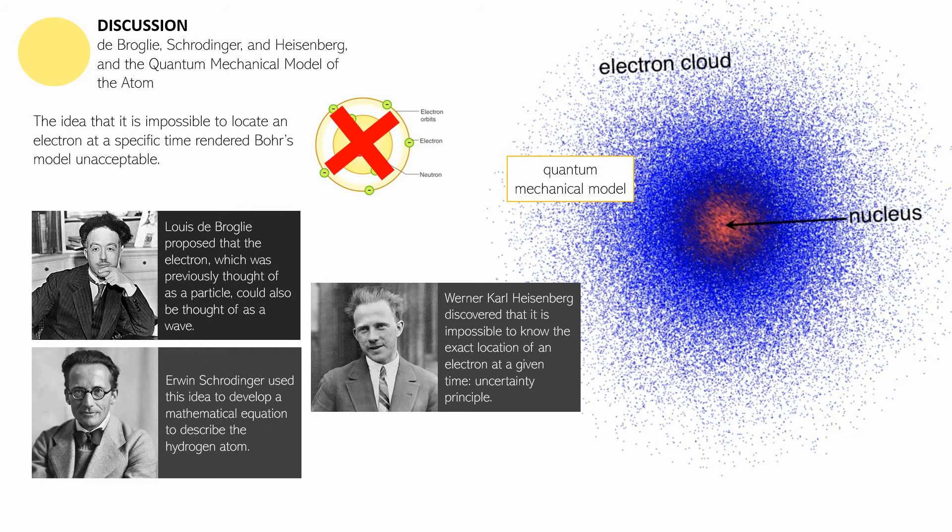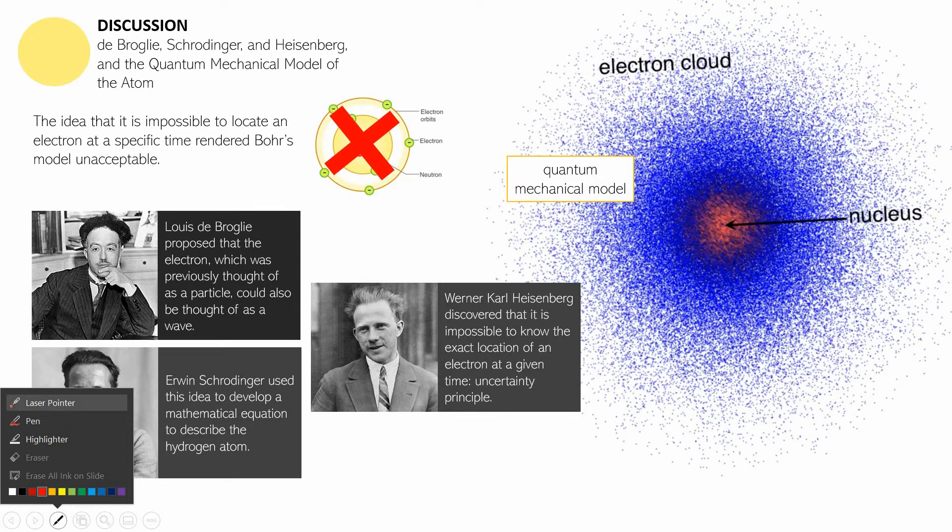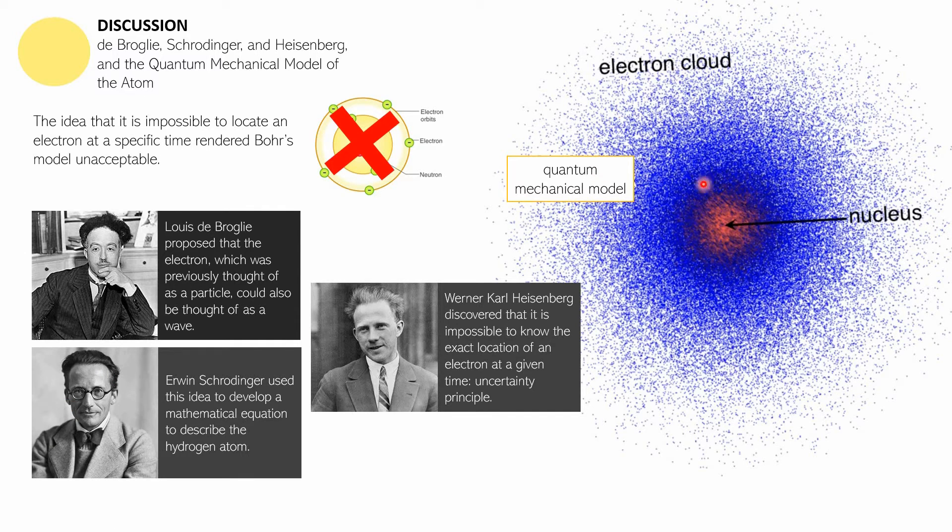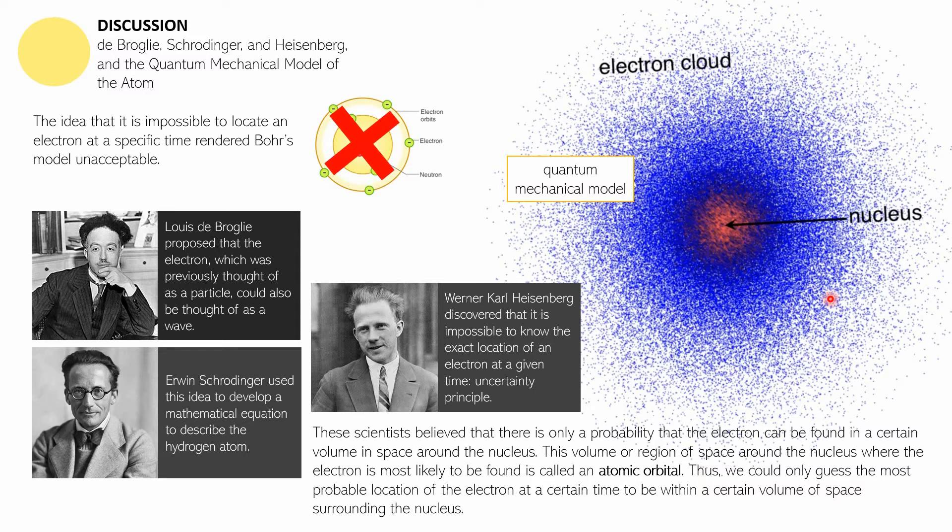The work of these three led to the quantum mechanical model, which is basically an electron cloud with a nucleus. There are only different colors that signify different regions of the atom. This nucleus is where you'll find most of the positive charge and the neutral charge, and this is just a cloud of negatively charged particles. The electrons here are in constant motion. These scientists believe that there is only a probability that the electron can be found in a certain volume in space around the nucleus.